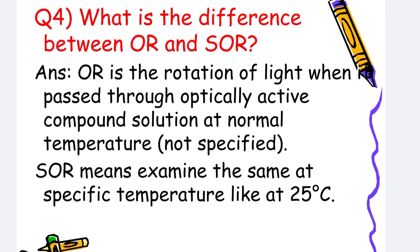What is the difference between optical rotation and specific optical rotation? Optical rotation (OR) is the rotation of light when it passes through an optically active compound solution at normal temperature. On the other hand, specific optical rotation (SOR) means examining the sample at a specific temperature, like 25 degrees centigrade.